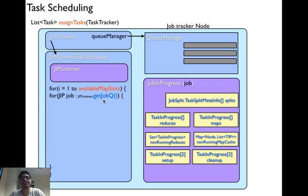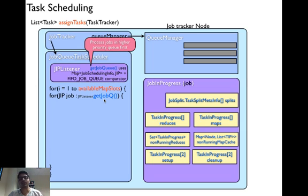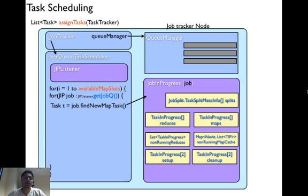The JobInProgressListener outputs a synchronized queue to the AssignedTask method. It processes jobs inside the higher priority queue first by maintaining a map and a FIFO job queue comparator. For more details, you can look at the code of JobInProgressListener. Inside the two for loops, you find the task to run by calling the FindNewMapTask method of the class JobInProgress. Remember that JobInProgress has data structures — reduces, maps, setups, and cleanup — which are arrays of TaskInProgress. It also has a map of node and list of tasks in progress, specified by nonRunningMapCache.